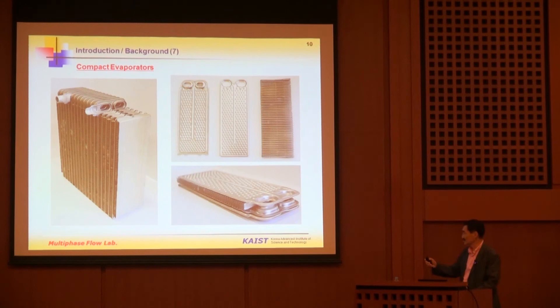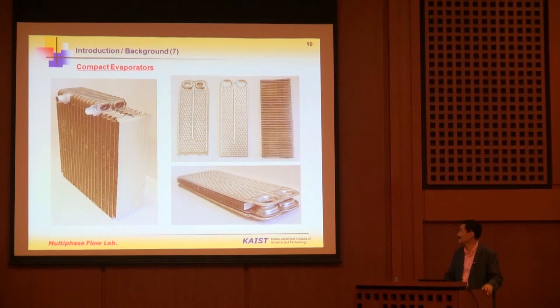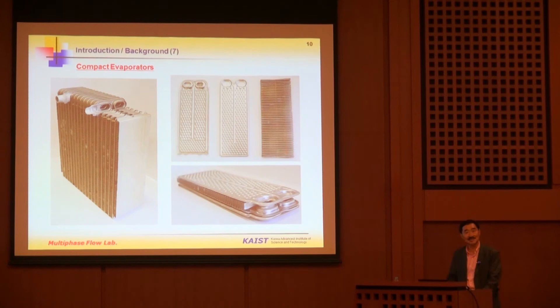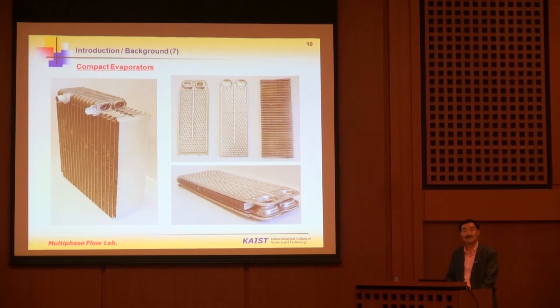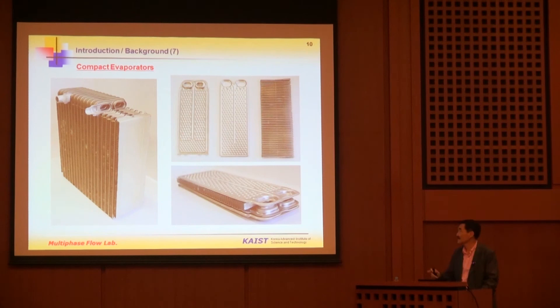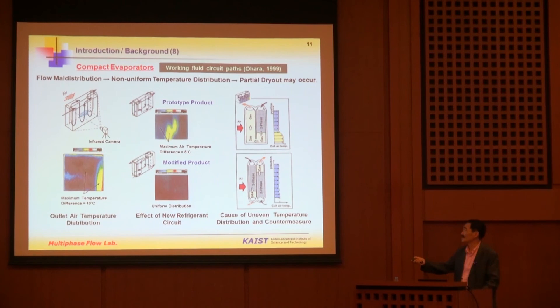Now let's look at the evaporator. This is an assembly of the type found in automobiles, located in front of the passenger compartment. It uses dimpled aluminum plates combined with aluminum fins between them. Two-phase mixture is introduced, flows through a header, comes down, goes to the back side, goes up, to another side, and finally leaves the evaporator. An important consideration is how to construct the flow circuit.